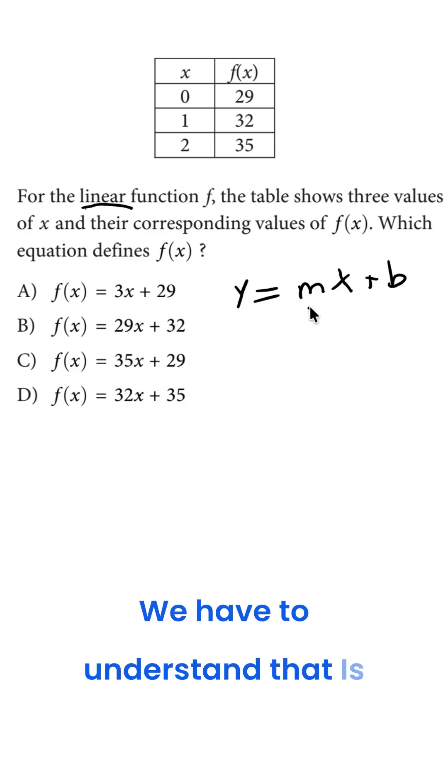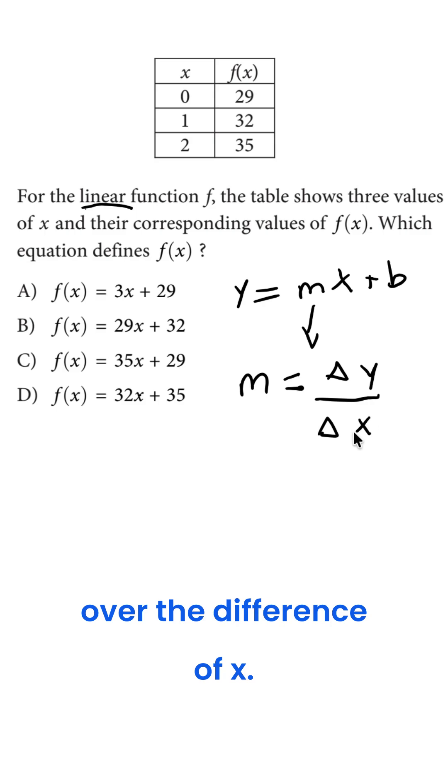We have to understand that m is the slope, which m of the slope is equal to the difference of y, which is the rise, over the difference of x. In this case, our y would be f(x). So the difference of f(x), as we can come to this table...